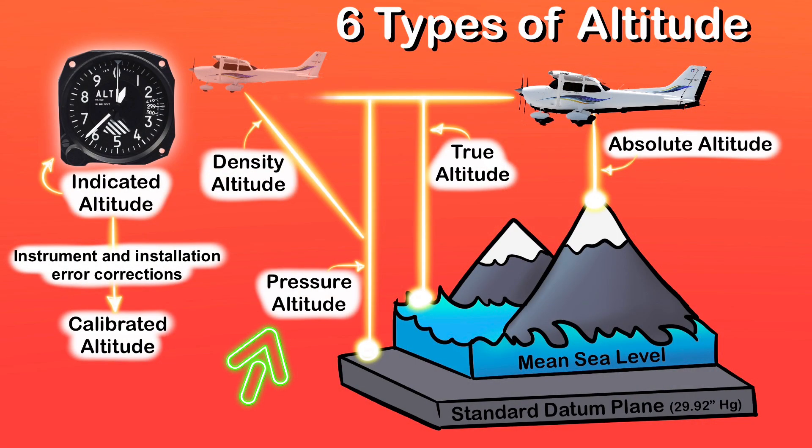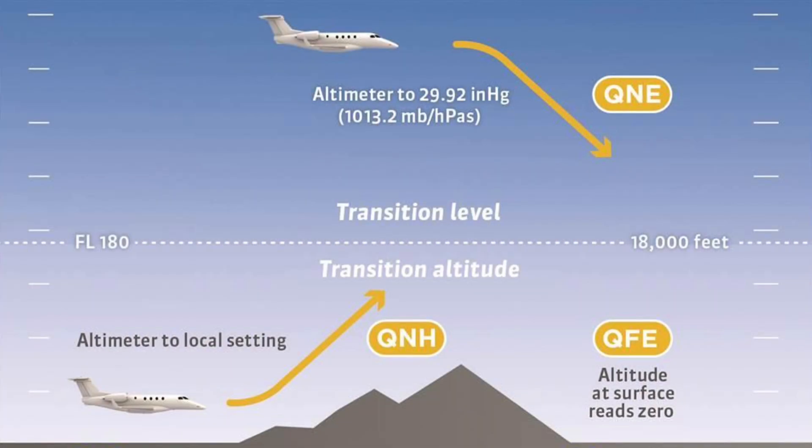Pressure altitude is what the altimeter reads when you set it to standard pressure, which is 29.92 inches of mercury. Standard pressure is a global reference point used in aviation — it represents standard atmospheric pressure above sea level on a standard day, which is very rarely an actual standard day. It's based on idealized conditions: 15 degrees Celsius, constant sea level, and no weather systems. So standard pressure is wrong more than it is right as temperature and weather constantly change. However, it is still a good reference point above 18,000 feet, so that all pilots use the exact same reference point and there are no collisions in the air.